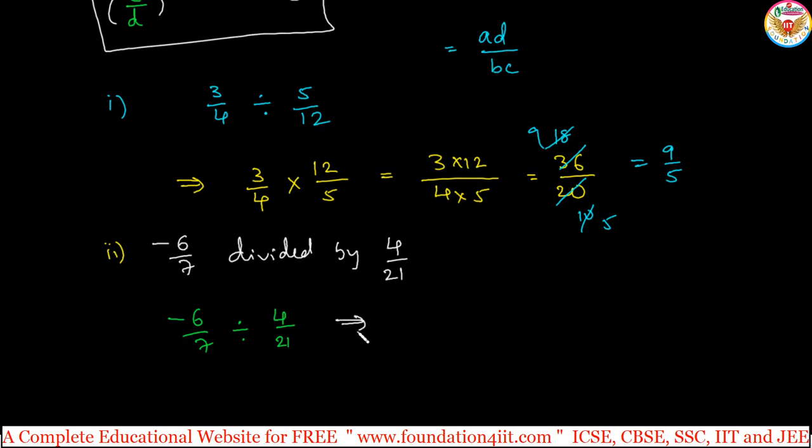Now, after writing this, next first fraction or first rational number as it is, should not change this. Whenever you keep the into symbol, then reverse, means division is the reverse of multiplication. So division symbol if you keep into, next immediately this 4 by 21 you can write 21 by 4, reciprocal of that.